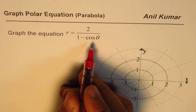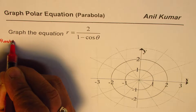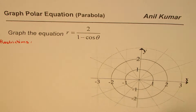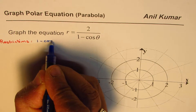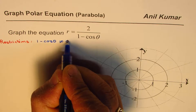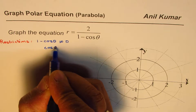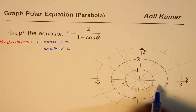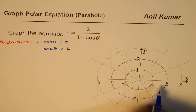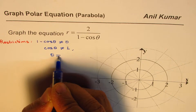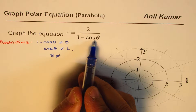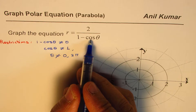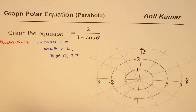To begin with, we can look into restrictions. Since we have something in the denominator, that cannot be 0. So 1 minus cos theta should not equal 0, which means cos theta is not equal to 1. Within 0 to 2π, theta is not equal to 0 and not equal to 2π, because that gives 1 minus 1 in the denominator, making it 0. So that is one restriction.